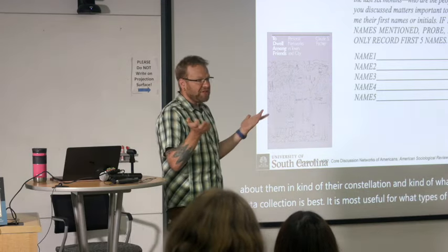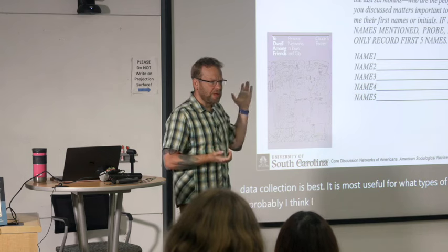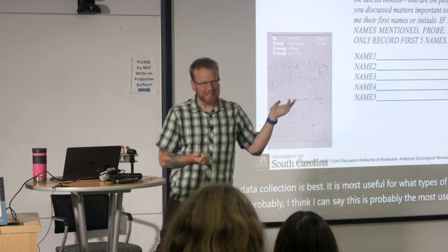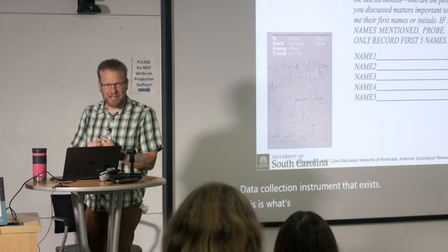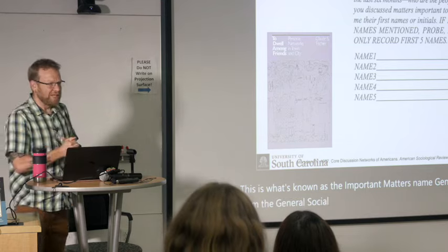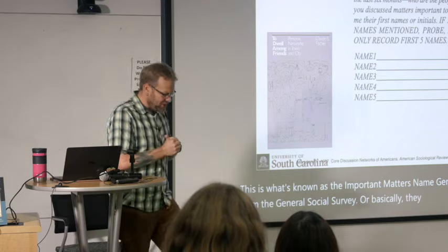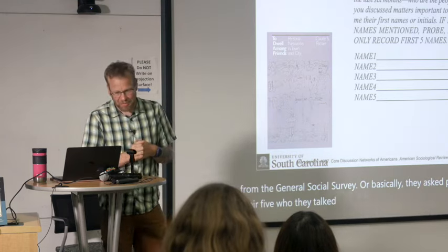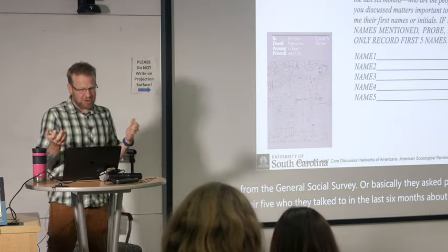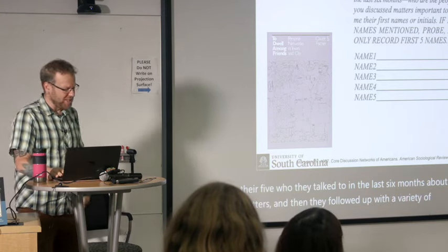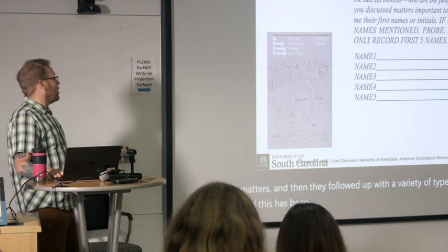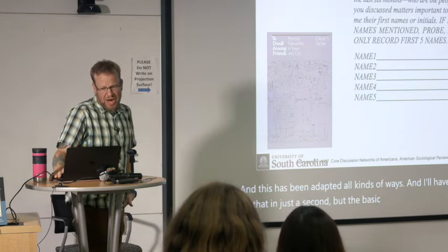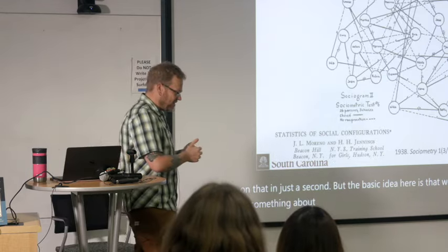This is probably the most used single network data collection instrument that exists: the important matters name generator question from the General Social Survey, where they asked people to tell who they talked to in the last six months about important matters — up to five people — and then followed up with a variety of questions. This has been adapted all kinds of ways, and the basic idea is that we're trying to get at something about who are in each other's important network circles.